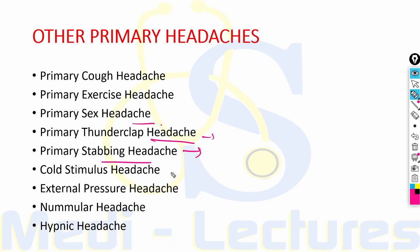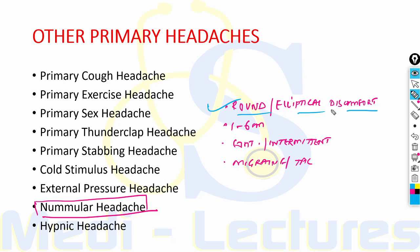Cold stimulus headache is also known as brain freeze headache and is due to ingestion of cold substances. External pressure headache can be seen due to external pressure from helmets, goggles and tight ponytails — we need to recognize the problem and remove the stimulus. Nummular headache is round or elliptical discomfort in the head area of around 1 to 6 cm in length, can be continuous or intermittent, and can be associated with migraine or TACs. Treatment is tricyclic antidepressants and anticonvulsants.